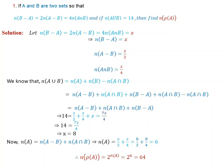Simplifying, number of A union B equals number of A without B plus number of A intersection B plus number of B without A. Replacing the values — number of B without A is X, number of A without B is X over 2, number of A intersection B is X over 4 — we get: 14 equals X over 2 plus X over 4 plus X, which equals 7X over 4. This implies X equals 8.